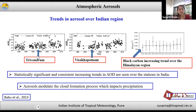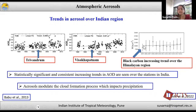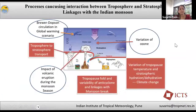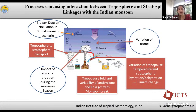Over the Indian region, these figures adopted from Babu et al. and Joshi et al. show observations of aerosol optical depth at Trivandrum and Visakhapatnam. We see that aerosol optical depth shows an increasing trend over these stations. This is black carbon measurements at the Indo-Gangetic Plain over the Himalayan foothills, where black carbon also shows an increasing trend. Other than aerosols and El Niño, processes causing interaction between troposphere and stratosphere are also linked to influencing the Indian summer monsoon.